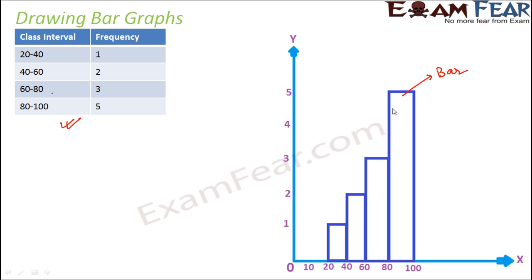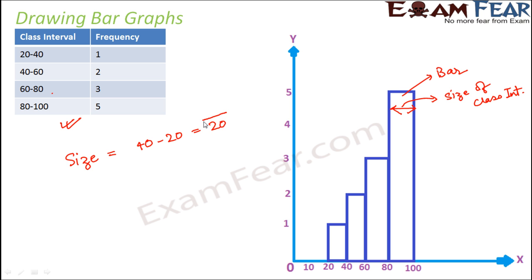The width of the bar tells us the size of the class interval. In this case, the size of the class interval is 40 minus 20, which equals 20. So the width of each of these bars would be 20, meaning the width of the bars equals the size of the class interval.